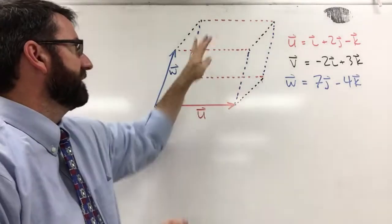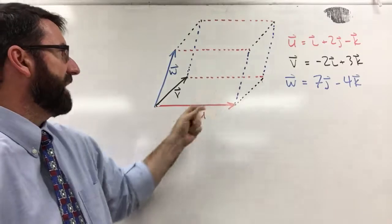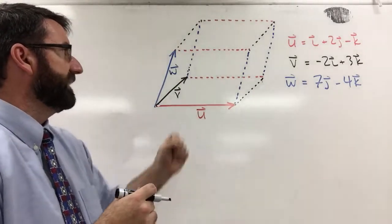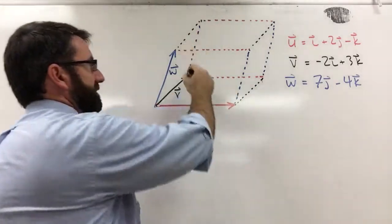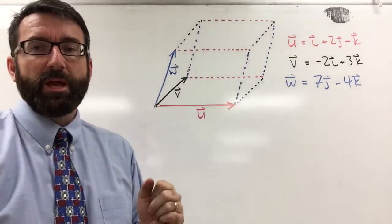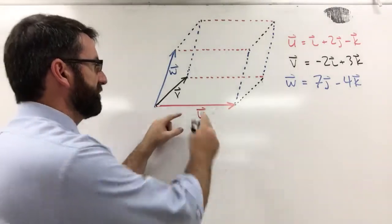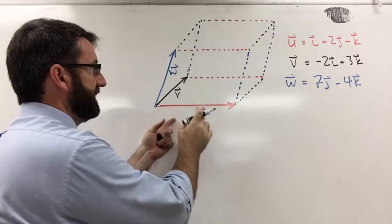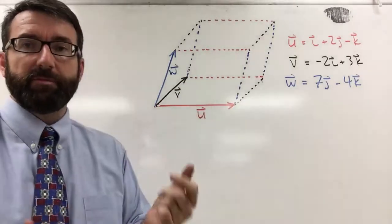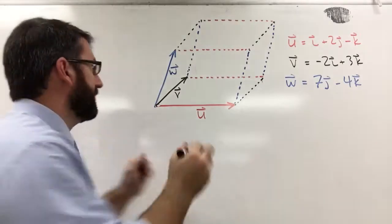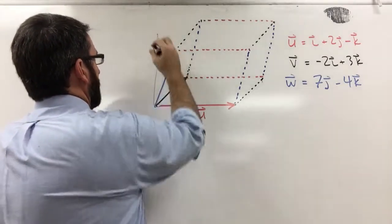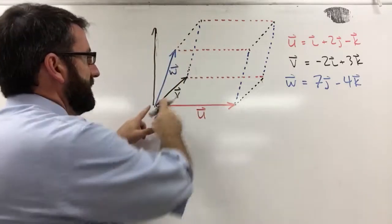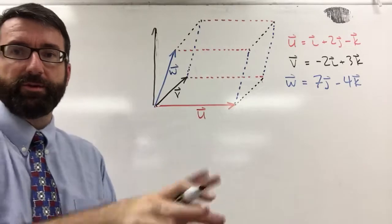I've drawn here a parallelepiped given by three vectors, and the volume is going to be given by the area of the base times the perpendicular height. The magnitude of the cross product u cross v is going to give us the area of the base. It's also going to give us a vector coming up perpendicular to the plane that u and v are on.